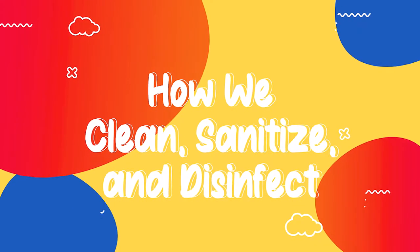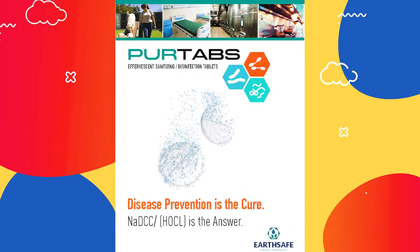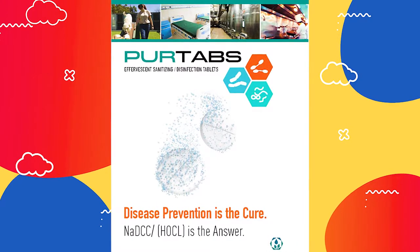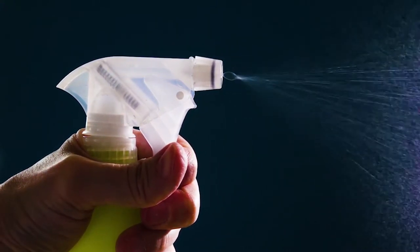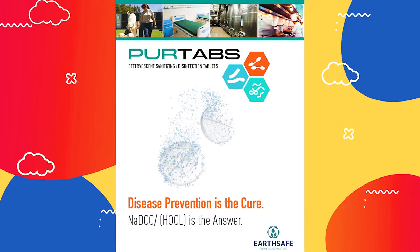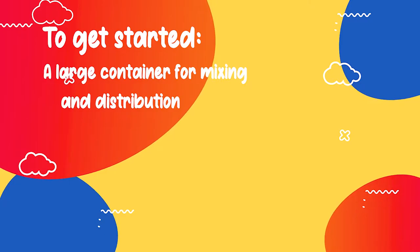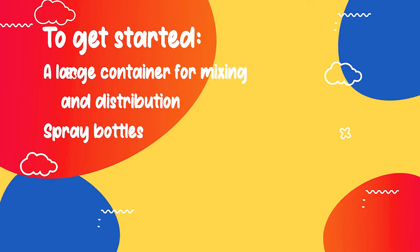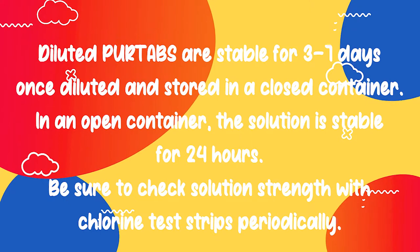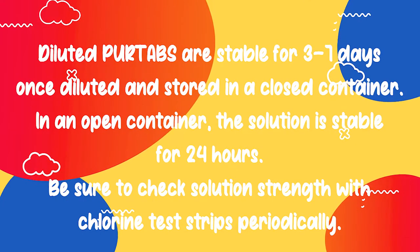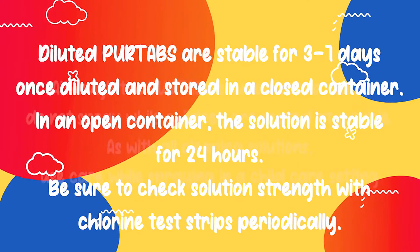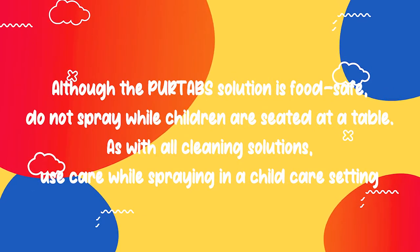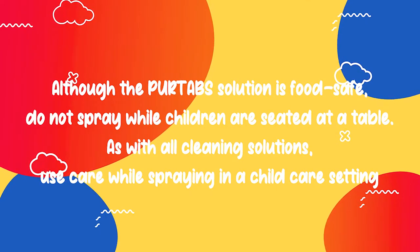To sanitize and disinfect, Doctor Daycare sites use Pure Tabs. Pure Tabs is a sustainable solid tablet which dissolves in water to become a powerful hypochlorous acid that, depending on concentration, is used as a food surface sanitizer and a hospital-grade disinfectant. These EPA-registered tablets dissolve quickly in water to form a sanitizing solution that is NSF D2 certified safe for food contact surfaces with no rinsing required. You'll need a large container for mixing and distribution, spray bottles — always kept out of children's reach and never containing other chemicals — Pure Tabs tablets, tap water, and chlorine test strips. Diluted Pure Tabs are stable for three to seven days in a closed container, or 24 hours in an open container. Check solution strength with chlorine test strips periodically. Do not spray while children are seated at a table.